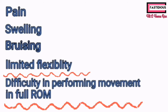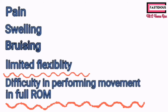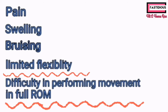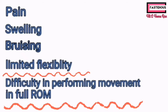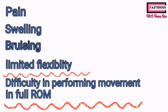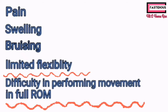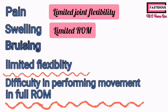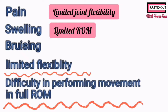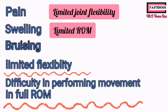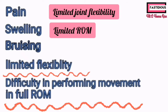Limited flexibility and difficulty in performing movement in full range of motion are two correlated symptoms. As we know, ligaments join two bones together, so when a ligament tears, it affects joint flexibility by decreasing the range of motion.